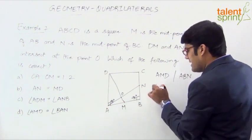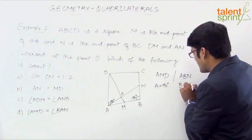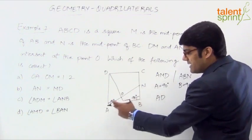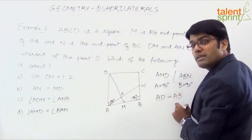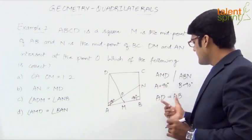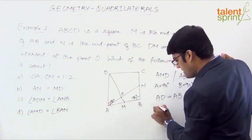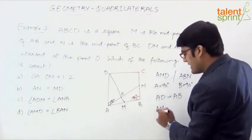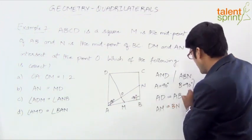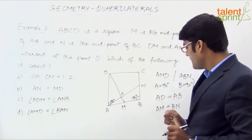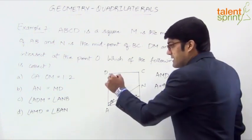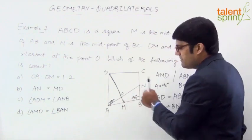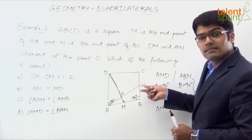Both are right-angle triangles with A equals 90 degrees and B equals 90 degrees. In triangle AMD, AD is one side, and in triangle ABN, AB is the corresponding side — both are equal because it is a square and all sides are equal. Also, AM is half of AB, and BN is half of BC. Since AB equals BC, half of AB equals half of BC, so AM equals BN.